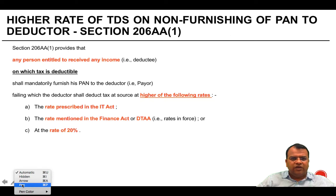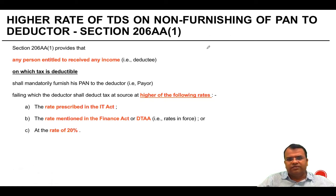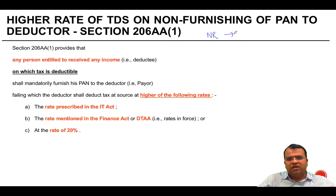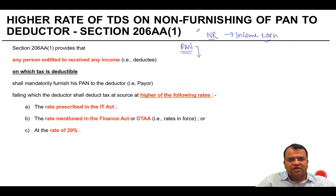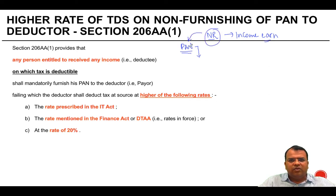Section 206AA deals with the higher rate of TDS on non-furnishing of PAN to the deductor. In many cases, non-residents earning income from India did not have a PAN number in India. So the government needed to verify whether the payment was legitimate, and tax would be deducted at a higher rate. These non-residents would be encouraged to obtain PAN in India. Section 206AA provides that if the non-resident does not furnish a PAN, then the tax will be deducted at a higher rate.